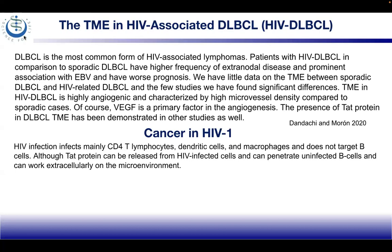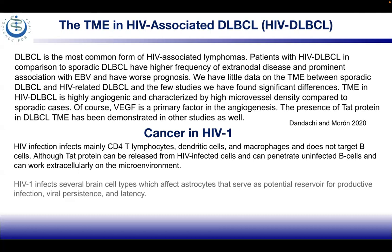HIV infection mainly infects CD8 T-lymphocytes, dendritic cells, and macrophages, and does not directly target B cells, although the Tat protein can be released from HIV-infected cells, penetrate uninfected B cells, and work extracellularly on the microenvironment.